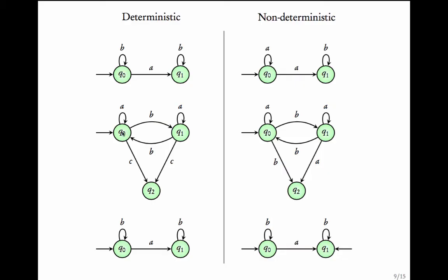In one transition system, at q0 on actions 'a', 'b', 'c' and at q1 on 'a', 'b', 'c', each has exactly one transition — so it is deterministic. Another transition system has unique transitions on all actions, but has two initial states, which makes it non-deterministic. Where there is a single initial state and unique transitions, it is deterministic.